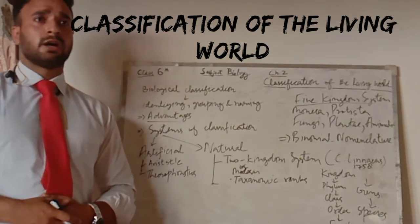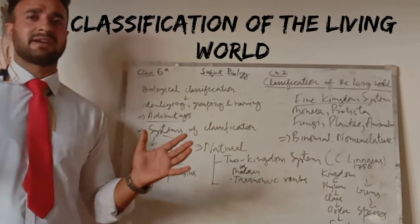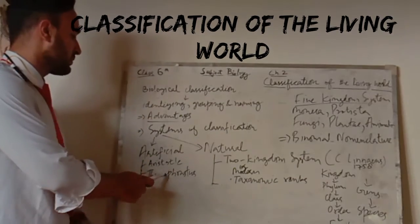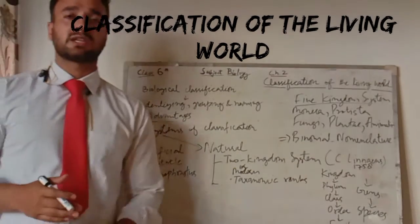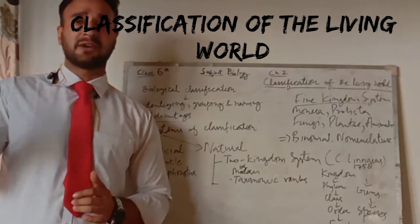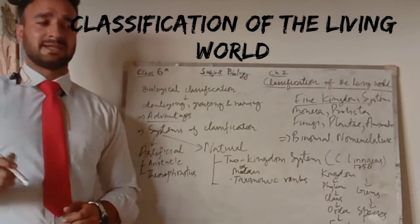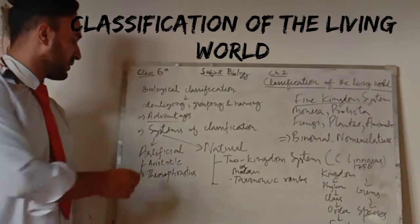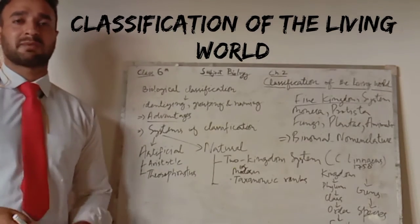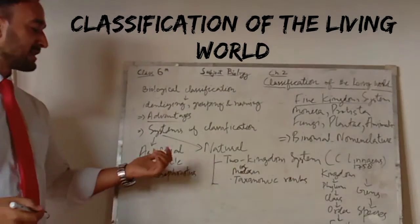Then was the next person, Theophrastus, who was actually the student of Aristotle, and he was the person who classified plants. He classified plants into trees, shrubs, herbs, and undershrubs, just on the basis of their size. So Theophrastus classified plants just on the basis of size. This is the artificial system of classification — Aristotle did it for animals and Theophrastus did it for plants. In this artificial system, only superficial characters were considered.